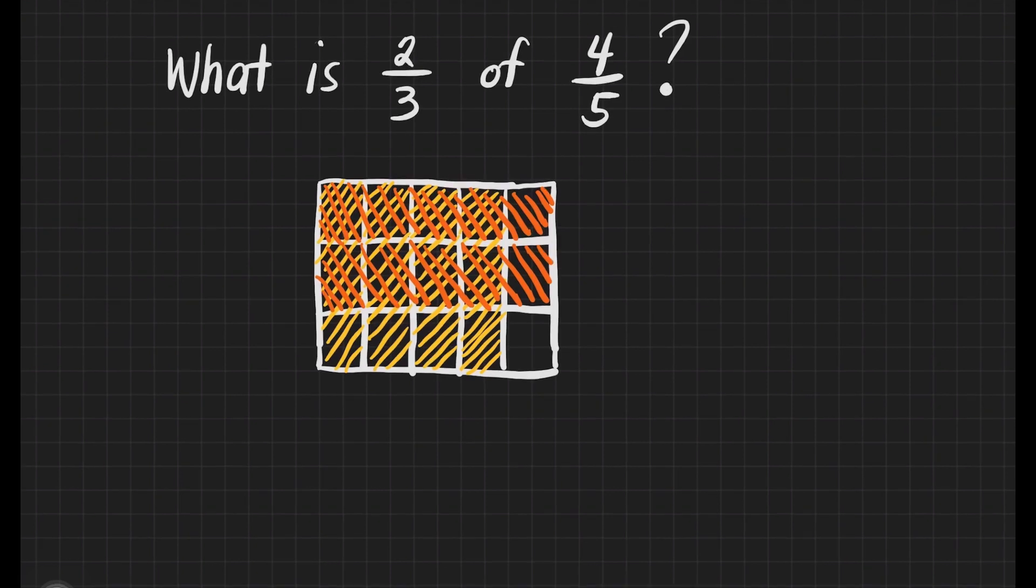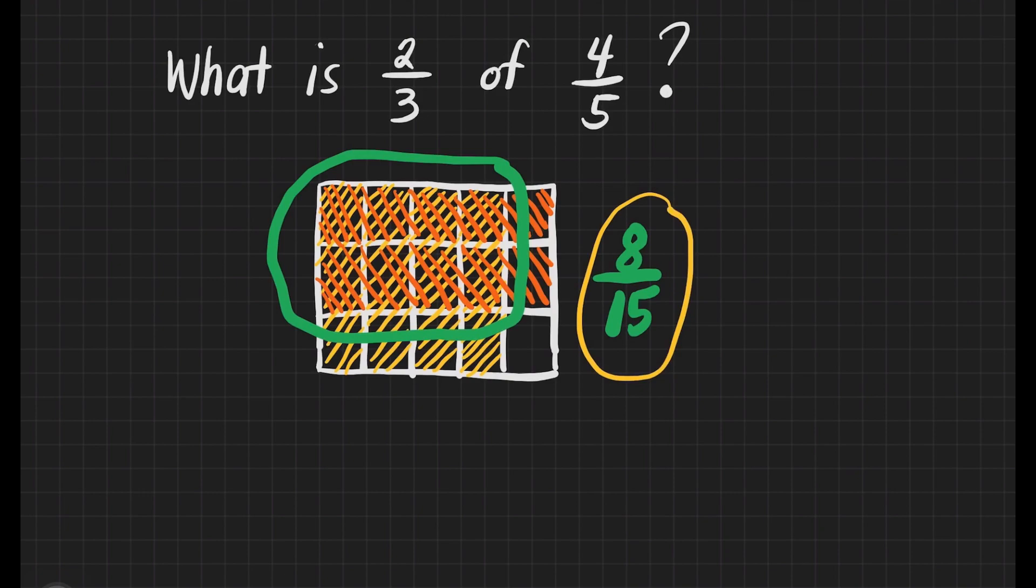The answer to this question is the parts that are being shaded twice. We have here 8 parts shaded twice out of 15. So the answer is 8/15.